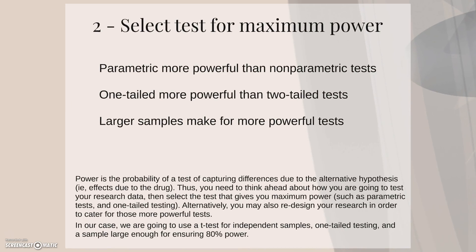Now the second step in the procedure is to select tests for maximum power. Power is a probability of a test of capturing differences due to the alternative hypothesis, in our case effects due to the drug. Thus, you need to think ahead about how you are going to test your research data, and then select the tests that give you maximum power.